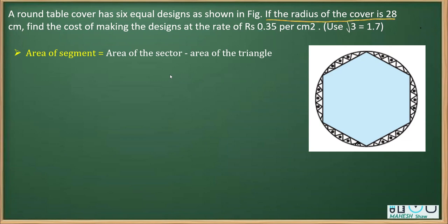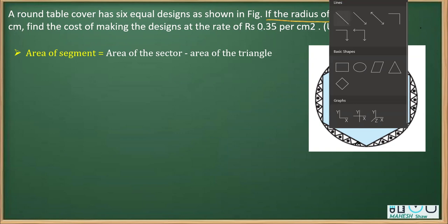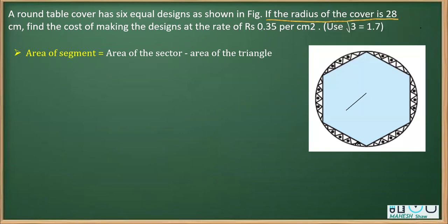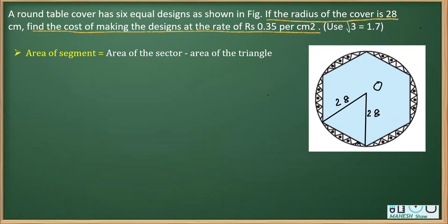The radius of this cover is 28 centimeters. If I join the center — assume this is the center and I joined with this point — this being the radius, from previous experience you know that in such a case there is a sector. This is 28 each, that is the radius of the circle in centimeters. We need to find the cost of making it at the rate of rupees 0.35 per centimeter square, so no unit conversion is needed. We should also note that here the value of root 3 is given as 1.7.